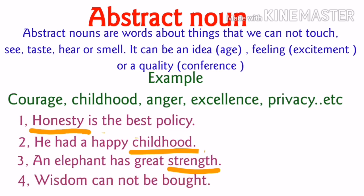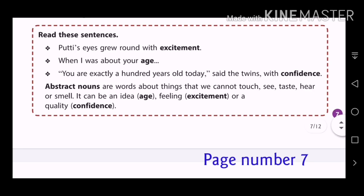See the last sentence: Wisdom cannot be bought. Wisdom is something being wise — it is a quality of a person which we cannot touch, smell or taste, so that is an abstract noun. In your textbook, page number 7, we can see these sentences: Putty's eyes grew round with excitement. When I was about your age. You are exactly a hundred years old today. Said the twins with confidence. Here excitement, age and confidence are the abstract nouns — which we cannot see, touch, taste, hear or smell. They are a kind of idea, feeling or quality.